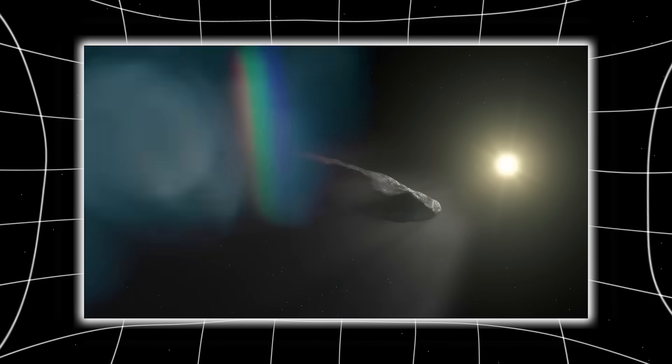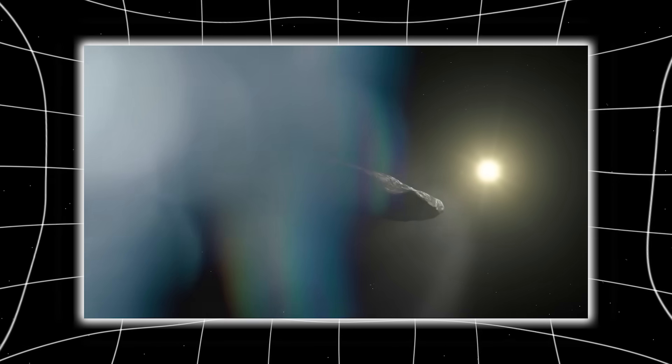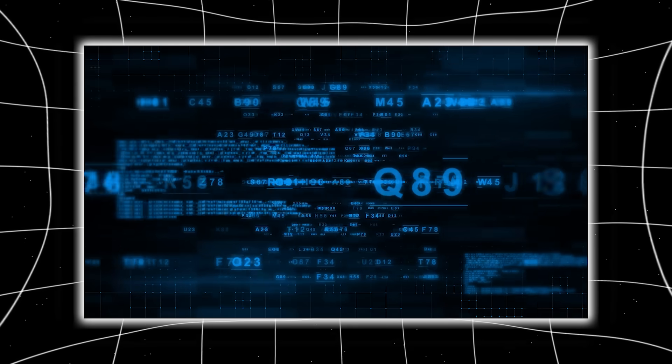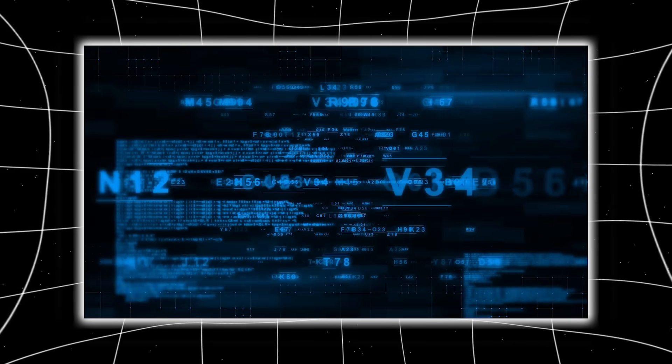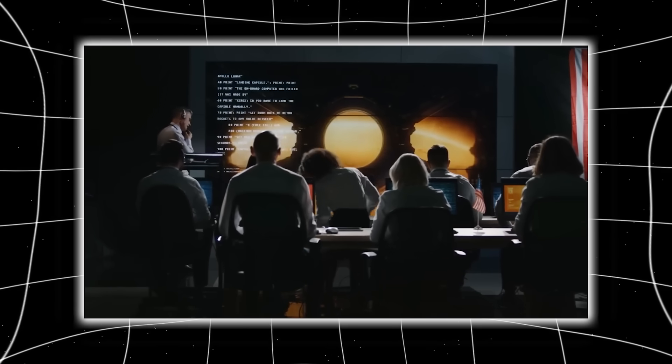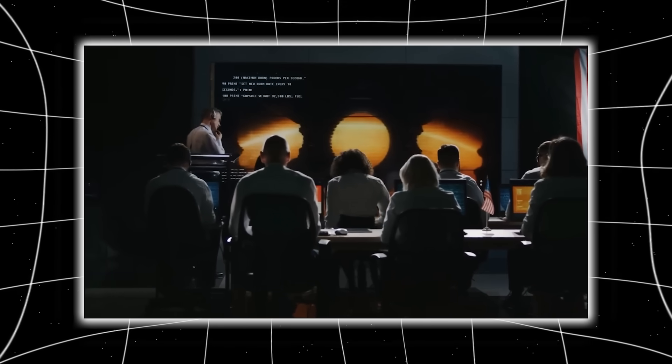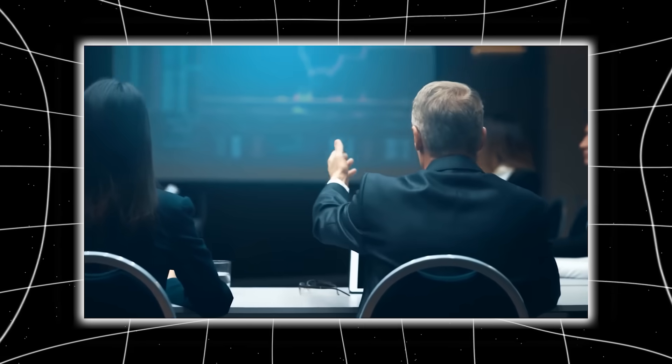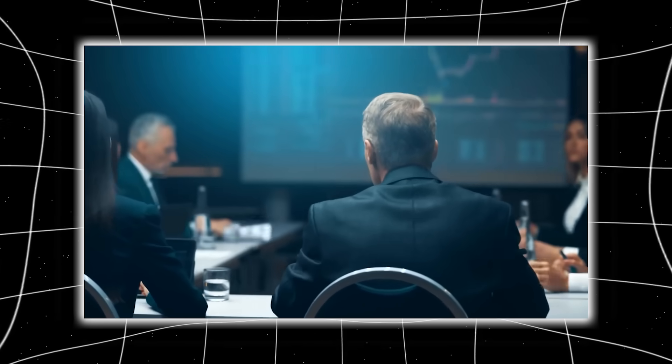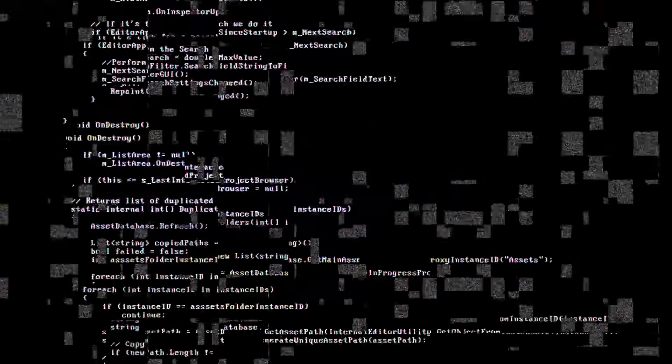This blackout mirrored what happened after Oumuamua, but this time, the reaction was far more intense. One anonymous source compared it to an EMP drill, except the target wasn't Earth. The entire team had been instructed to act as though something, or someone, might already be listening in. Was this damage control? Or were authorities trying to prevent a signal feedback loop, one that could trigger a larger chain of responses, far beyond our control?